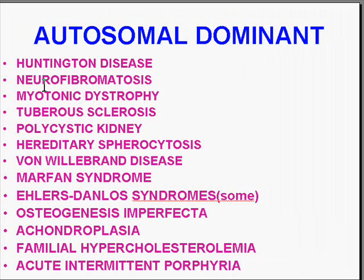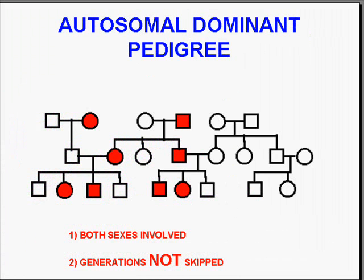You can have all these diseases just from being heterozygous. In an autosomal dominant pedigree it makes sense that both sexes would be involved, and because it only takes a heterozygous state to produce the disease — delineated as red boxes for males or red circles for females — generations are not skipped. This is the classic pedigree for autosomal dominant conditions: both sexes involved, generations not skipped.